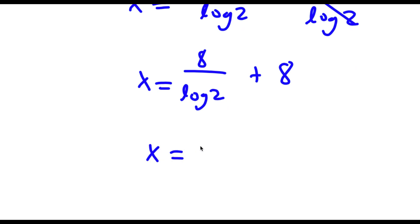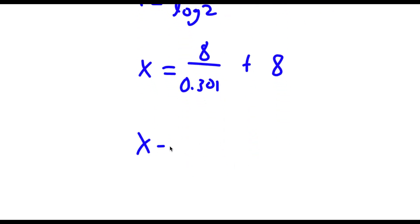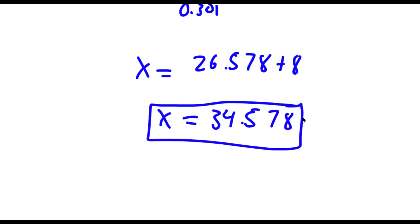Now log 2 equals 0.301, so I have 8 over 0.301 plus 8. Now 8 over 0.301 equals 26.578, and adding 8 gives 34.578. So this is my answer.